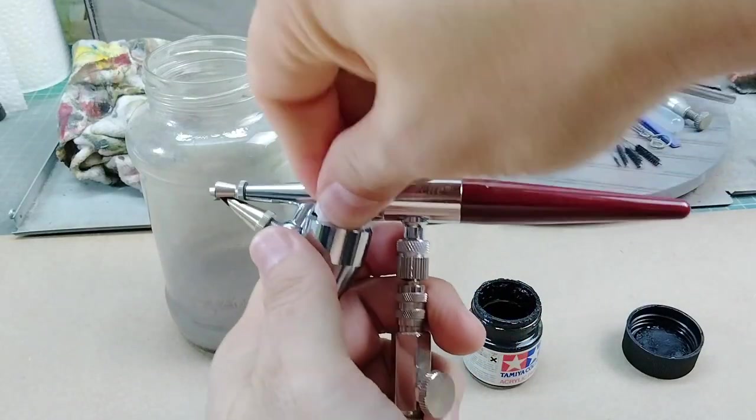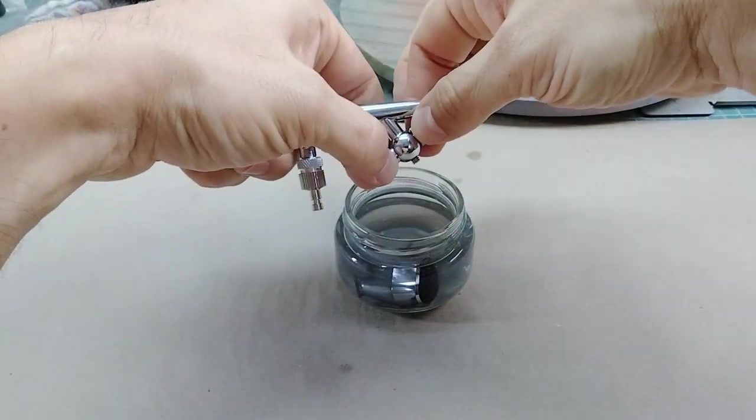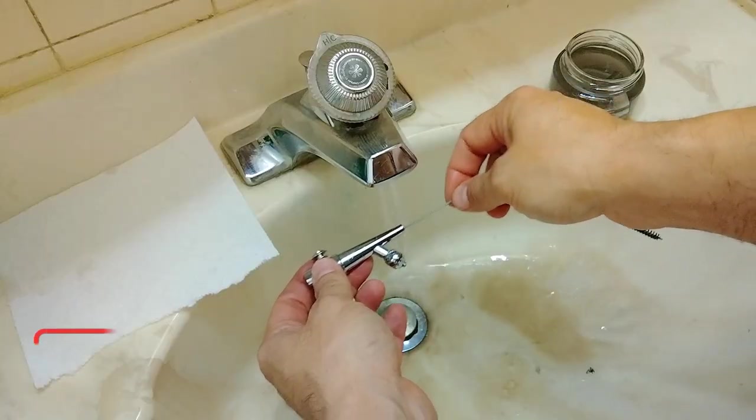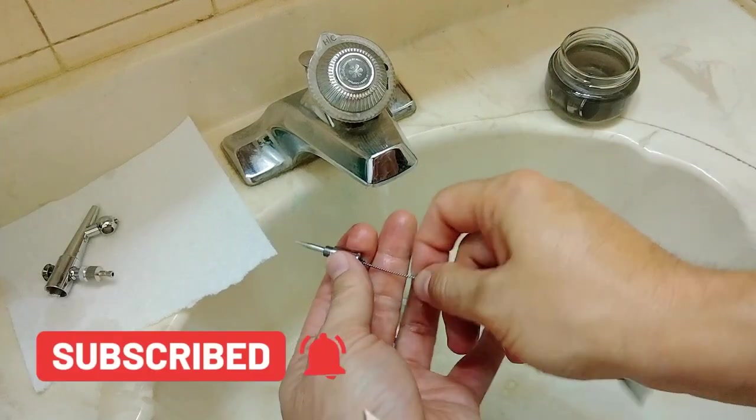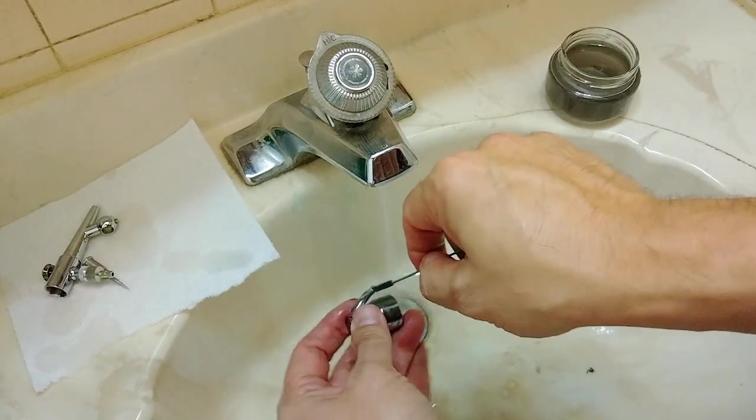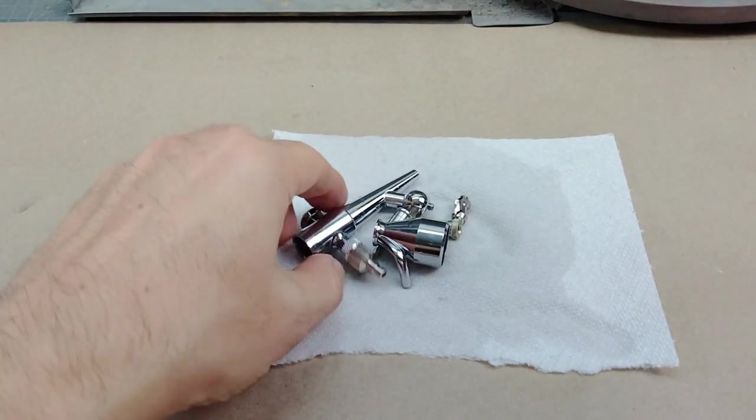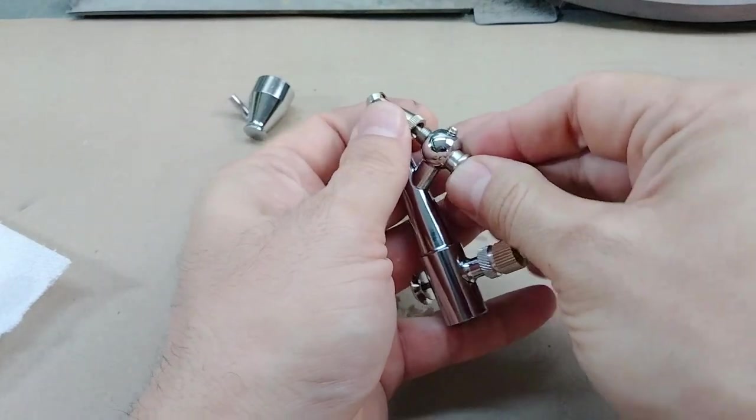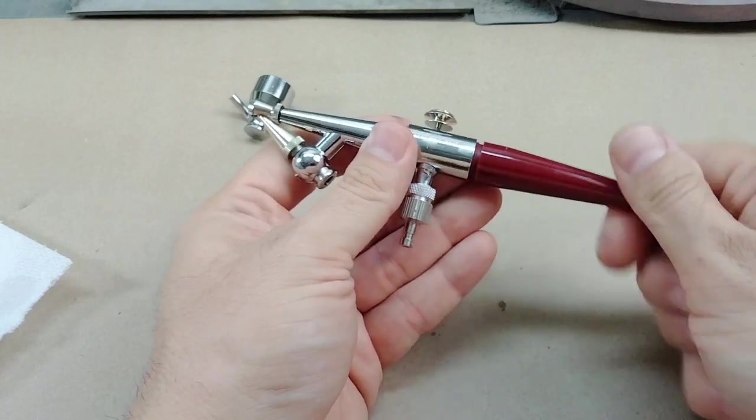Of course, no airbrush test is complete without seeing how complicated it is to clean and how many parts are going to be needed to take apart in order to clean it. The Paasche H airbrush and airbrushes like it are usually pretty simple to clean, with only a few parts to disassemble and take to the sink. They're relatively easy to break down and reassemble. Reassembly of the airbrush was the reverse of the disassembly, and the airbrush was ready to go again.